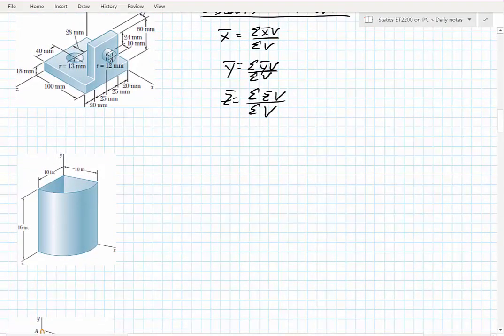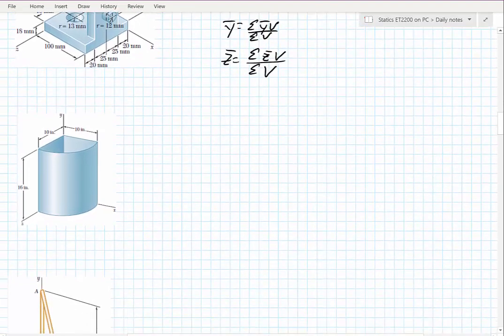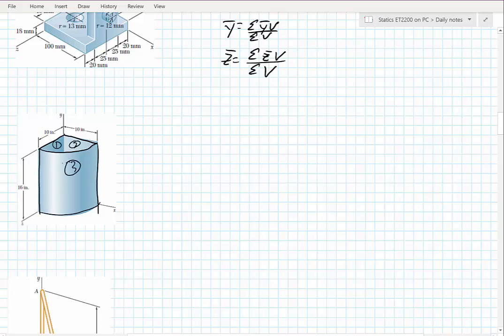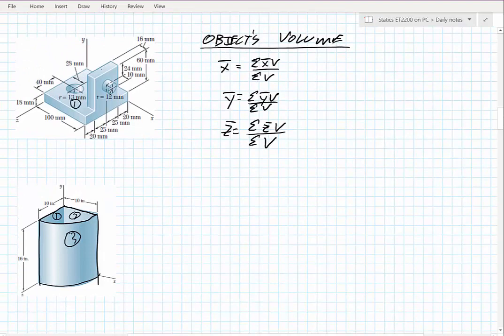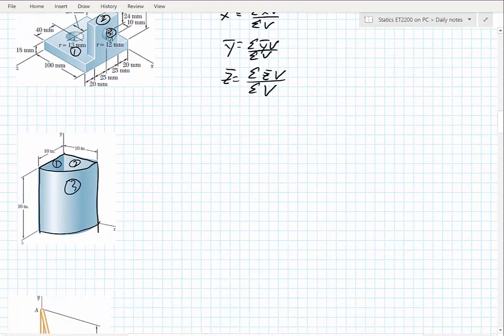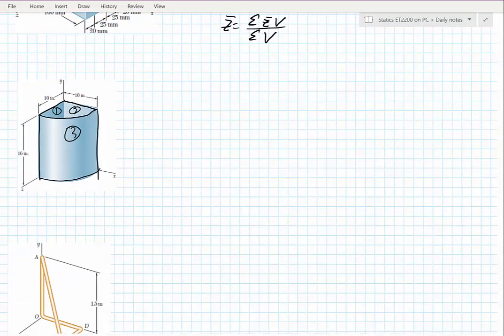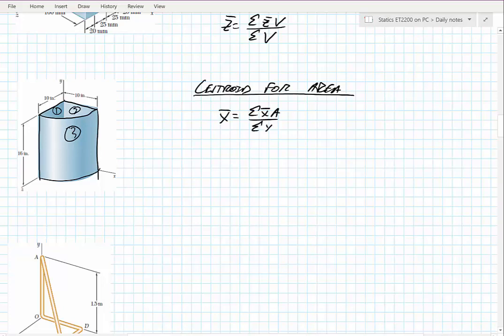The second way we can look at this is if we're treating these as almost like thin plates. So instead of a volume, what I would have is like an area of each side - this would be like side 1, side 2, side 3, versus before I'd have a volume of shape 1, shape 2, shape 3. So instead of the volume, what we're going to talk about is a centroid for an area. And for an area, my equations look very similar, except now what we have is sum of my x-bar times area over the sum of the areas, and the same for the y and the z.